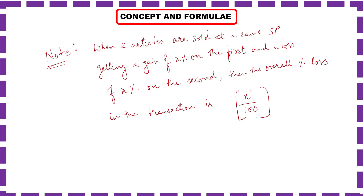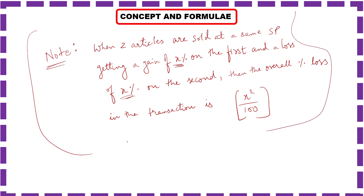There is a special formula to note: when two articles are sold at the same selling price, and we get a gain of x% on the first article and a loss of x% on the second, then the overall loss percentage in the transaction is x² / 100. We will take an example and apply this formula. You can also do these problems by the traditional approach, but it takes time. Using this formula, we can get the answer directly.